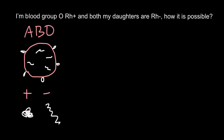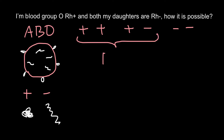When we have two alleles in a diploid organism, those two alleles can make three different genotypes: positive/positive, positive/negative, and negative/negative. The first two genotypes produce the blood group we call RH positive, and the third produces the blood group we call RH negative.